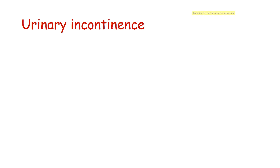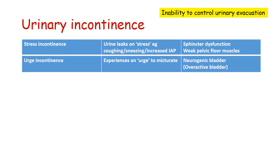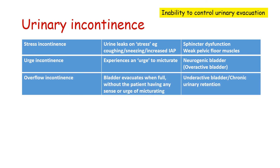Incontinence is the inability to control urinary evacuation. Stress incontinence means urine leaks on stress, for example coughing, sneezing, or increased intra-abdominal pressure, and is seen in conditions like external urethral sphincter dysfunction and weakness of the pelvic floor muscles. Urge incontinence is when the patient experiences a sudden urge to micturate, and is seen in overactive neurogenic bladder. Overflow incontinence is when the bladder evacuates when full without the patient having any sense or urge to micturate — seen in conditions of chronic urinary retention or LMN kind of urinary bladder.